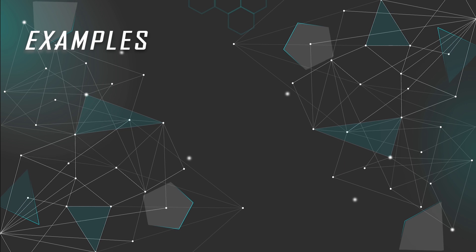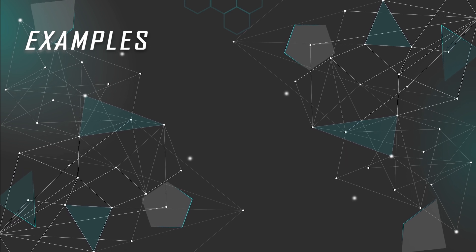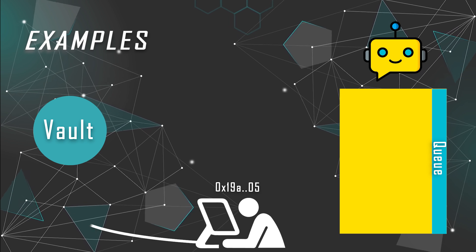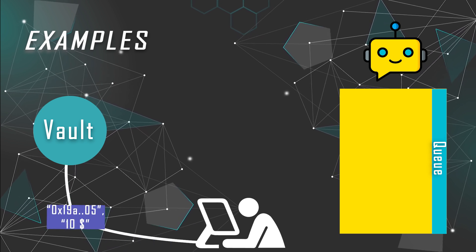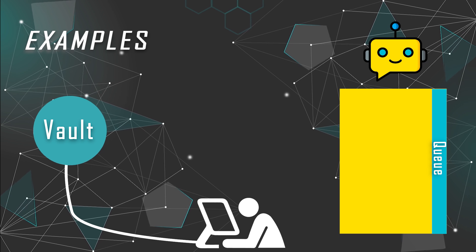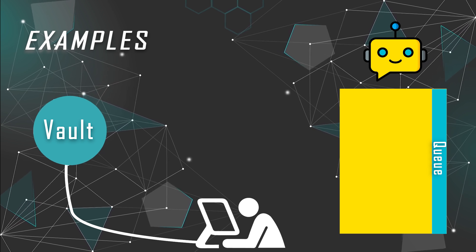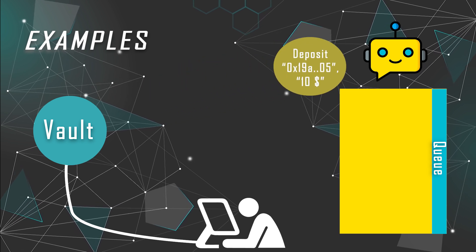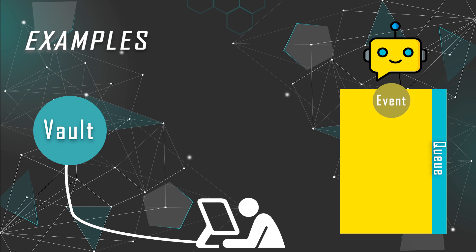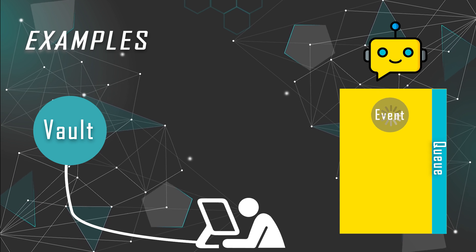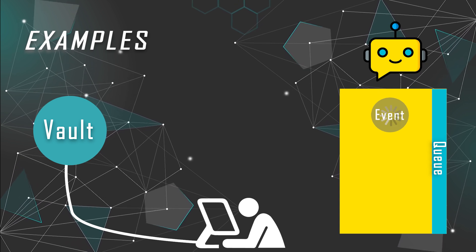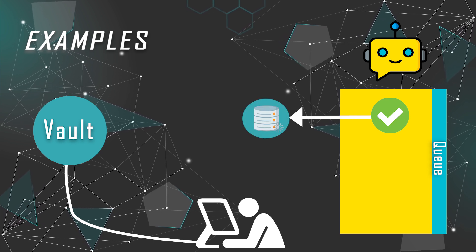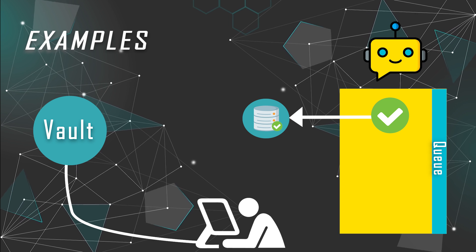Consider the scenario when users deposit 10 tokens for 10 in-game tickets. Firstly, they interact with the vault smart contract from the front-end. The vault will grab the tokens, store them, and emit a deposit event with all the needed parameters. Then the bots will catch the event, put them in the queue, check for vulnerabilities, and if everything is okay, it will call the Gaming API to update the player ticket balance in the database.